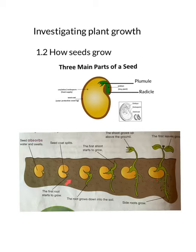Here are the different stages where a seed germinates and grows into a new plant. You can also observe these different stages at home by soaking bean seeds or groundnut seeds and observing them every day — how much they have grown and what part of the seed grows first.